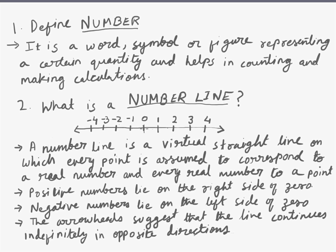The properties of number line are that the positive numbers are represented on the right side of zero and the negative numbers are represented on the left side of zero. And the two arrowheads suggest that the line continues indefinitely in opposite directions.